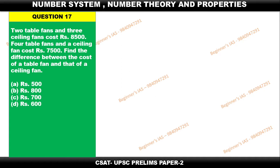Hello aspirants, welcome. Let us discuss question number 17. Two table fans and 3 ceiling fans cost rupees 8500. Four table fans and one ceiling fan cost rupees 7500. Find the difference between the cost of a table fan and that of a ceiling fan. This is a linear equation based question that comes under the number theory concept.